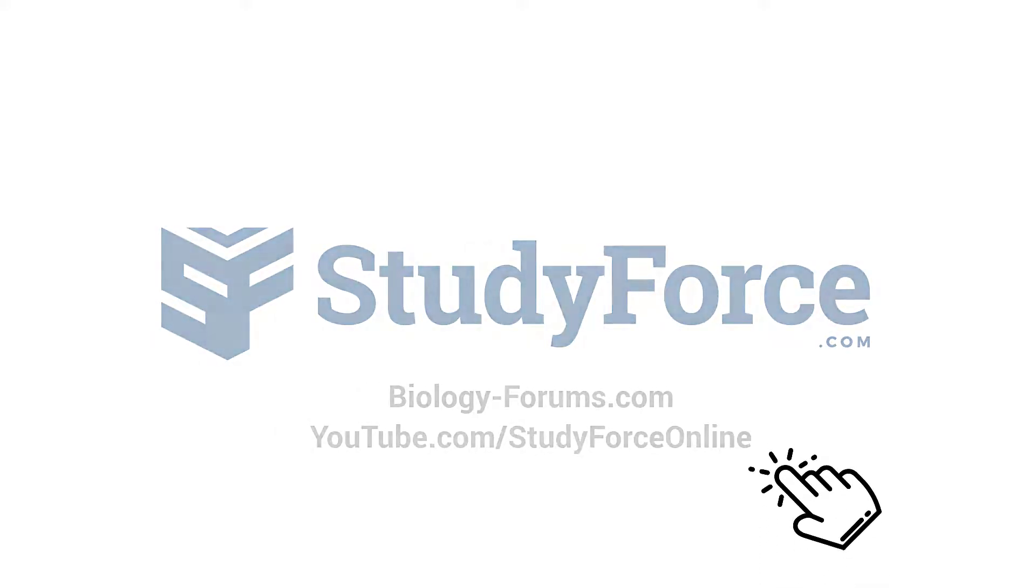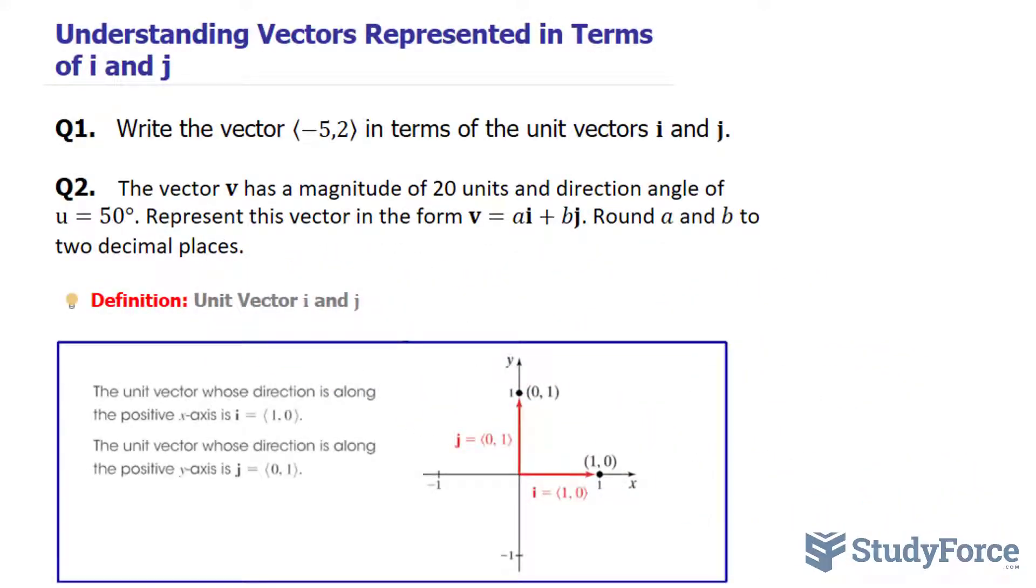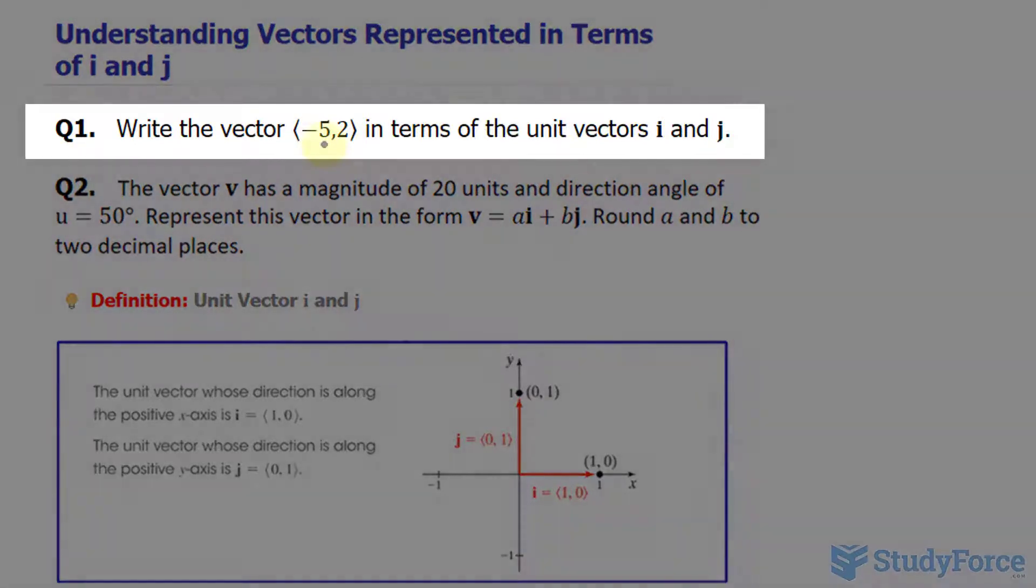In this lesson, we'll discuss why vectors are represented in terms of i and j. Question 1 reads: write the vector (-5,2) in terms of the unit vectors i and j.